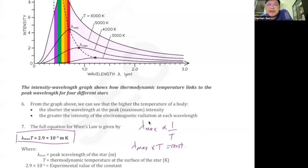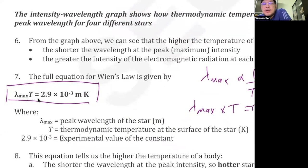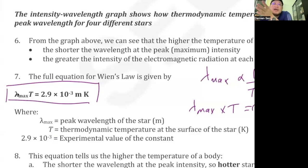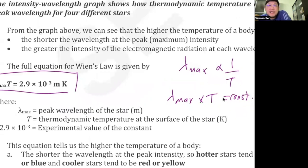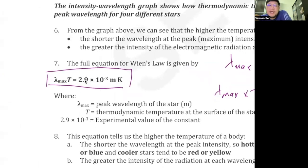Because of this inversely proportional relationship, there is a formula: λmax × T = constant = 2.9 × 10⁻³ m·K. λmax does not mean the maximum wavelength produced — it is the wavelength emitted with the highest intensity. There are other wavelengths emitted too, but λmax is the one with highest intensity. If they give you λmax and temperature for the sun, and then tell you the λmax of another star, you can use this formula — either λ₂T₂ = λ₁T₁ as a ratio, or by direct substitution — to calculate the temperature of that star.